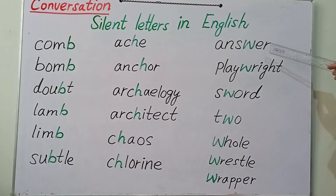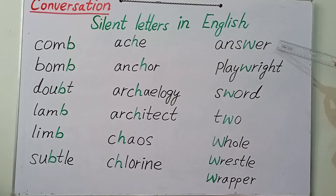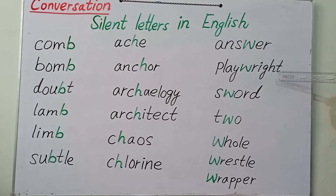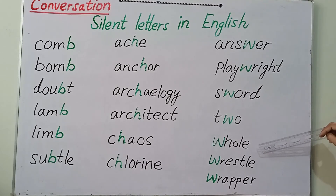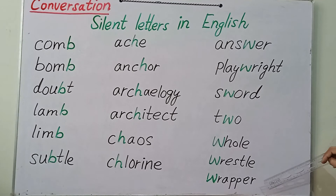Here is the column for the silent letter W — we don't speak out the W sound. Like the word answer, second is playwright, sword, tomb, bowl, rascal, wrap.